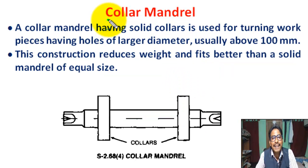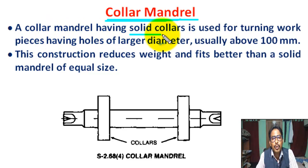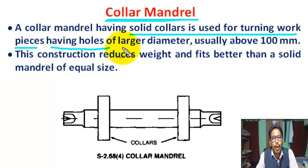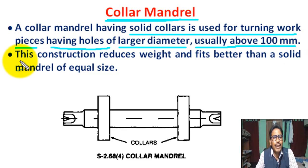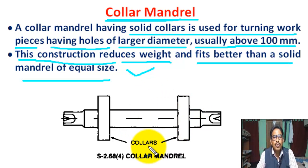Now, what is a collar mandrel? This is the figure of a collar mandrel. There are two collars, one at the left side and one at the right side. A collar mandrel having a solid collar is used for turning workpieces having holes of larger diameter, usually above 100 mm. This construction reduces weight and fits better than a solid mandrel of equal size, and it reduces the cost of the mandrel.